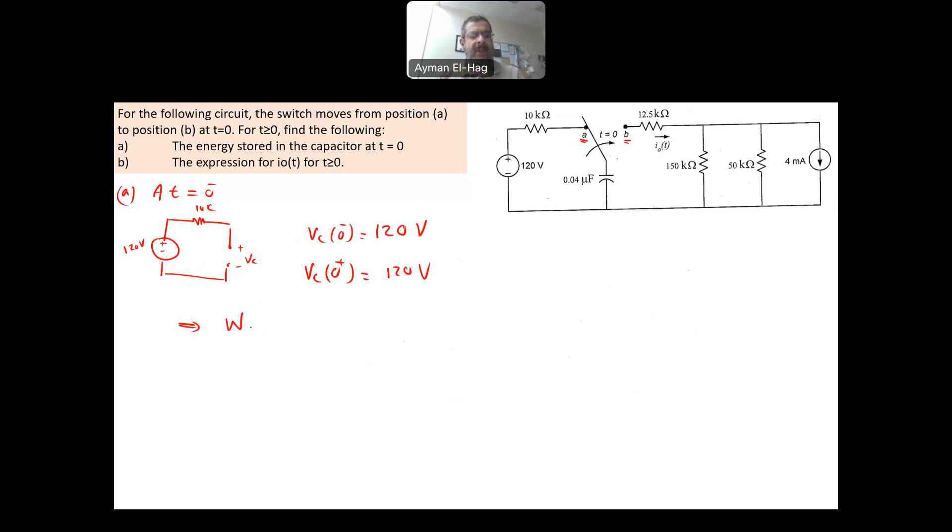And from this, we can say that the energy stored in the capacitor is equal to 1/2 C V square of the capacitor. This is 1/2 times C, C is 0.04 times 10 to minus 6. We have to convert the microfarad into farad times 120 square. And this will give me 0.288 millijoule. That is how much energy is stored in the capacitor.